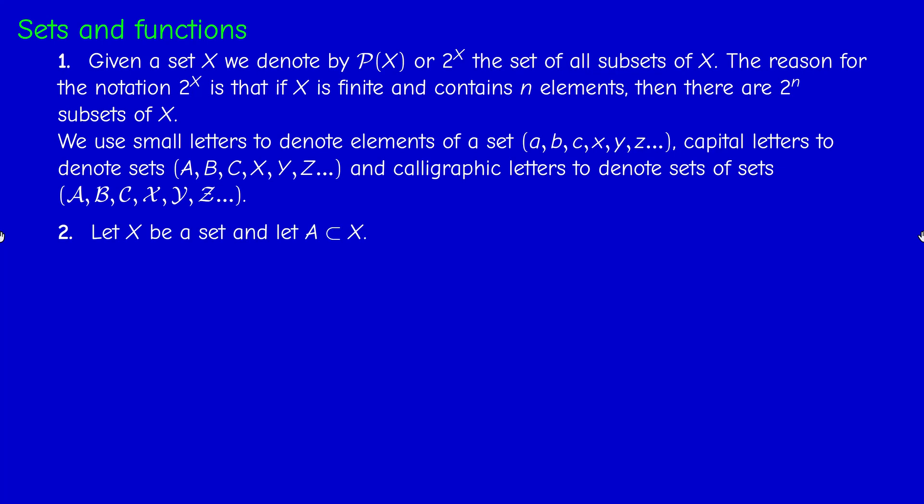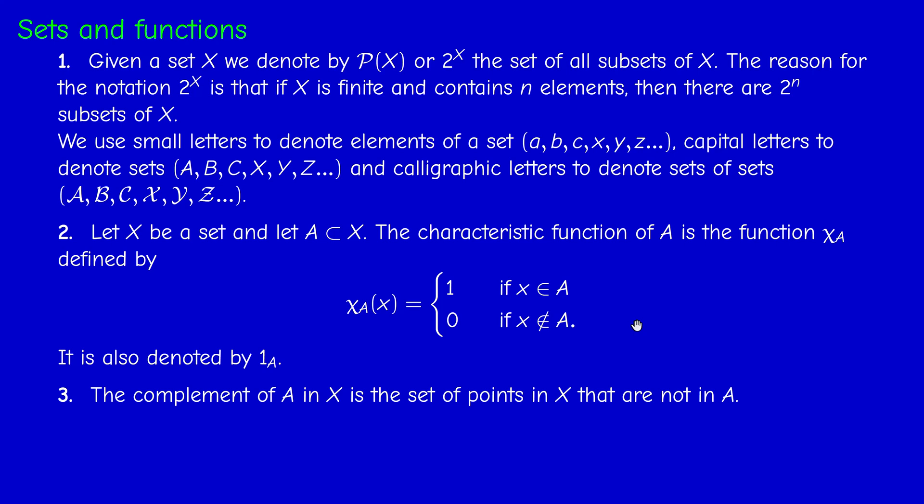If you have a set X and the subset A of X, the characteristic function of the set A is the function which is equal to 1 on A and 0 outside A. It's also denoted by 1 sub A. So, chi of A or 1 sub A.